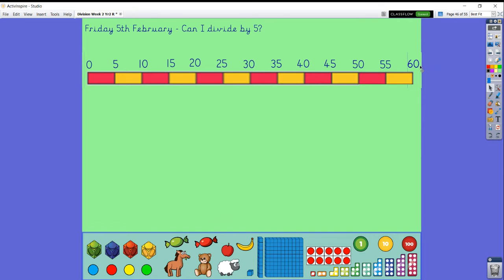Let's add our times table facts onto that. Zero times five is zero. One times five is five. Two times five is ten. Three times five is fifteen. Four times five is twenty. Five times five is twenty-five. Six times five is thirty. Seven times five is thirty-five. Eight times five is forty. Nine times five is forty-five. Ten times five is fifty. Eleven times five is fifty-five. Twelve times five is sixty.